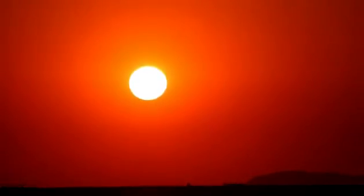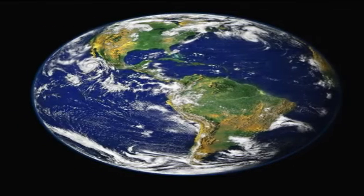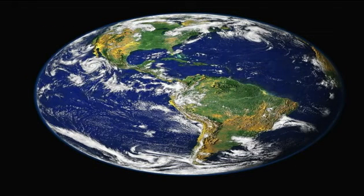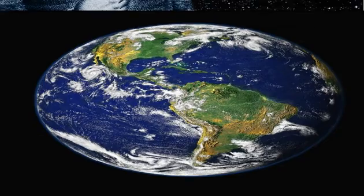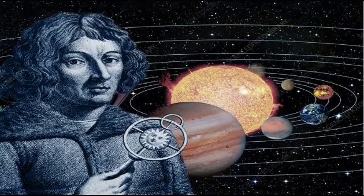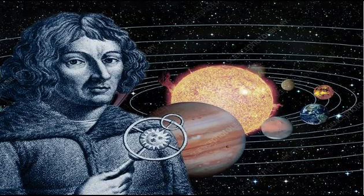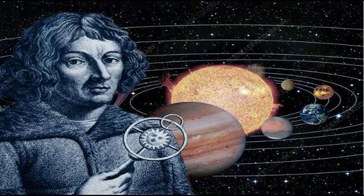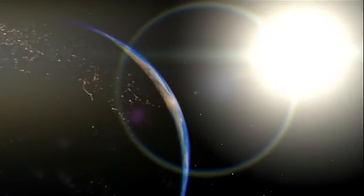Earlier, people used to think that the earth is stationary, meaning it's not moving or fixed at one place. But in the 16th century, Nicholas Copernicus, a Polish astronomer, first proved that the earth is not stationary. In fact, it has two movements: rotation and revolution.